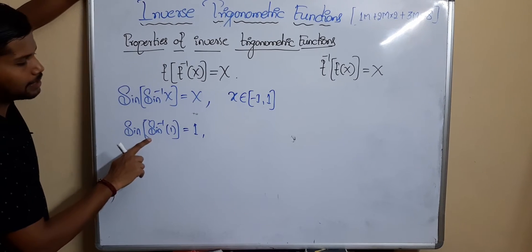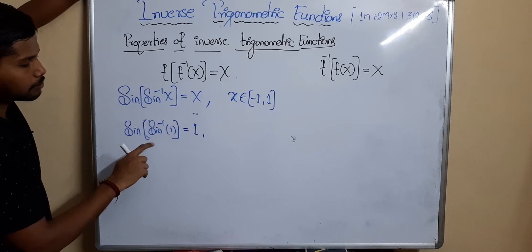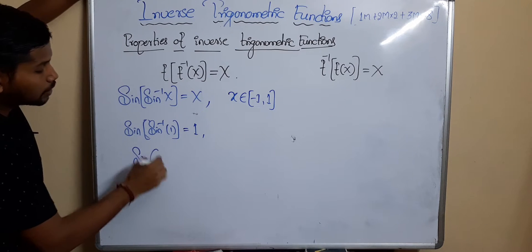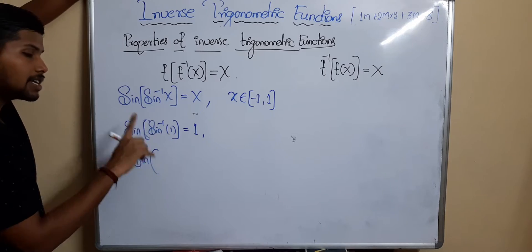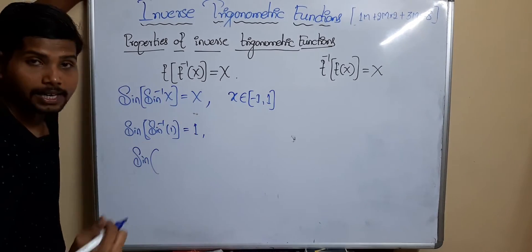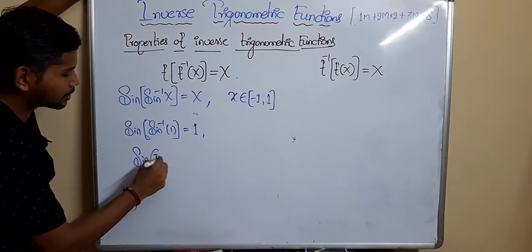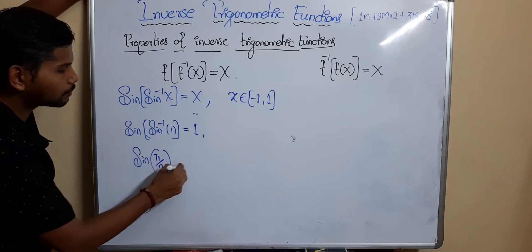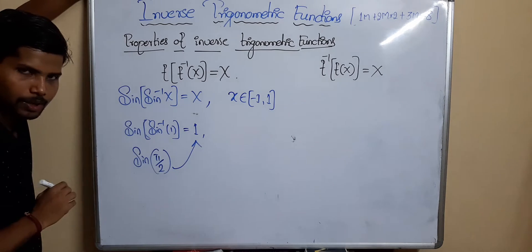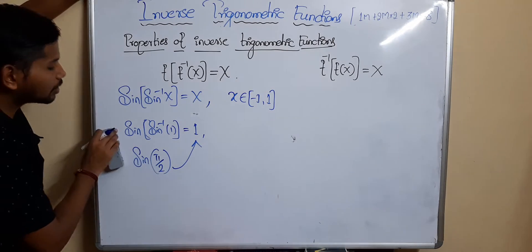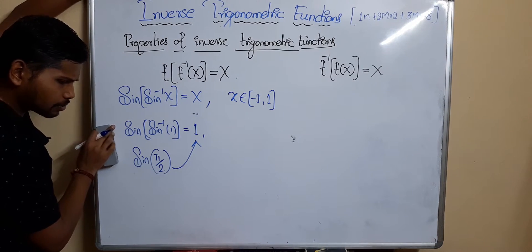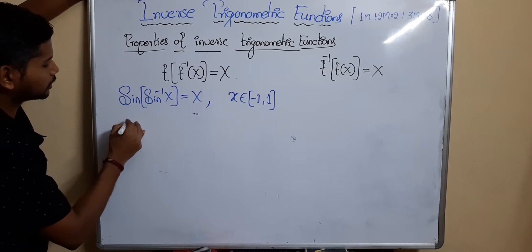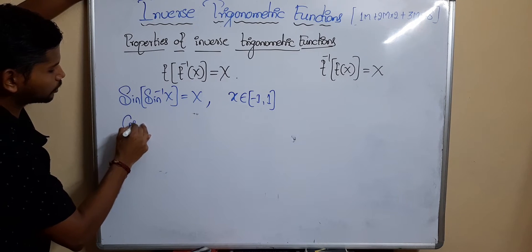To verify: sin(sin⁻¹(1)) means sine equals 1 for which angle? It is π/2. And sin(π/2) = 1. So we get the same value. In a similar manner, I'll write the remaining five trigonometric functions.